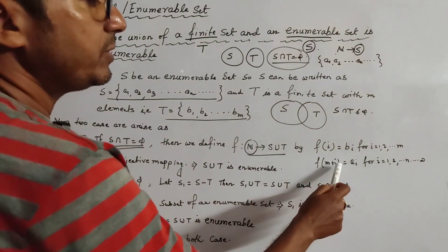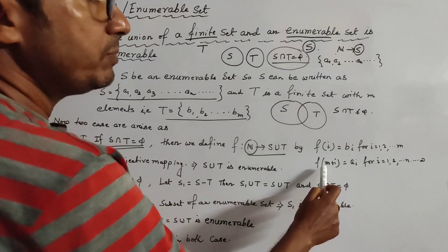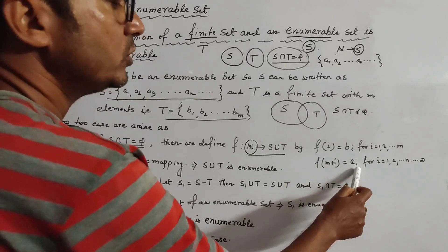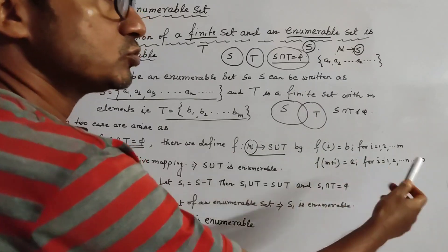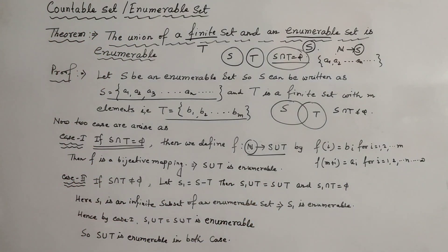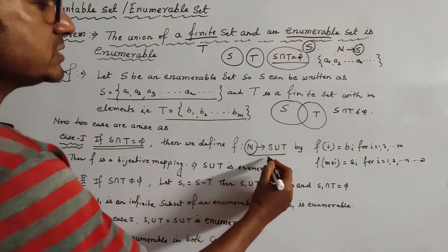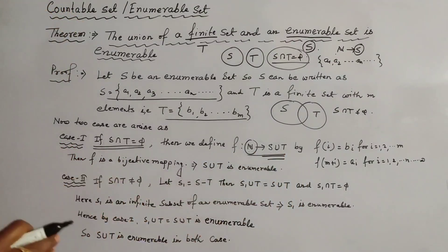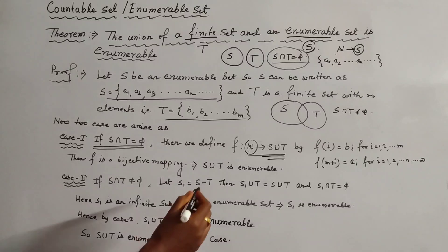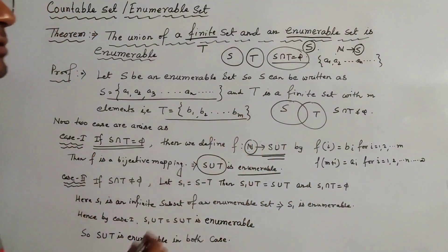So f(M+1) = A₁, f(M+2) = A₂, and so on. Clearly, this mapping from ℕ to S ∪ T is a bijective mapping. Therefore, S ∪ T is an enumerable set. This completes Case 1.